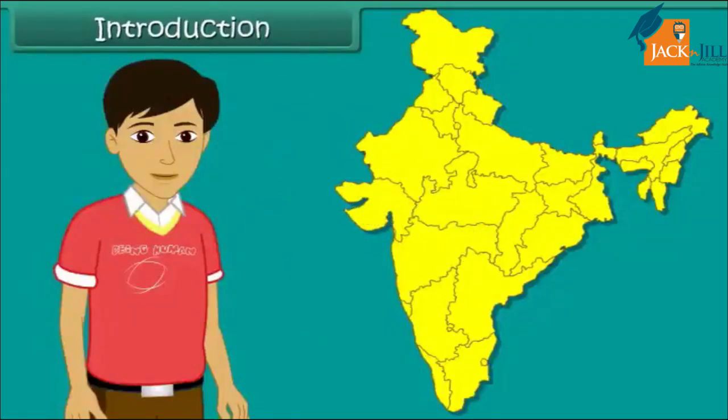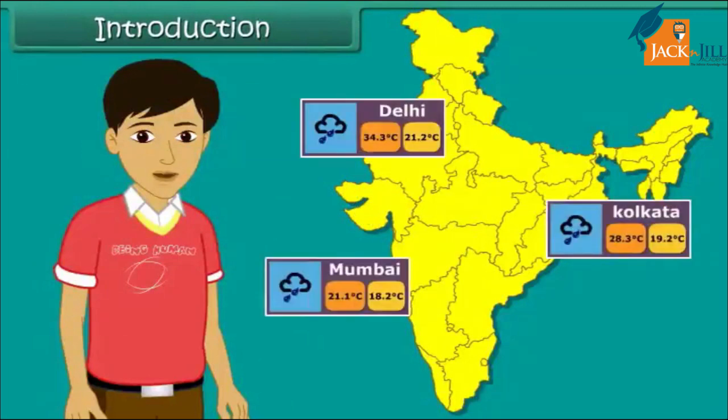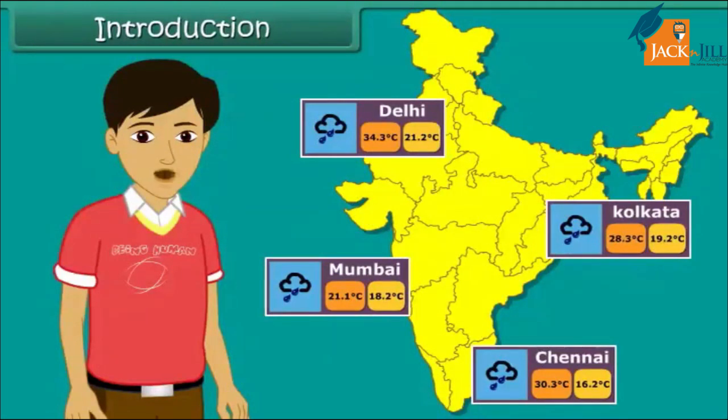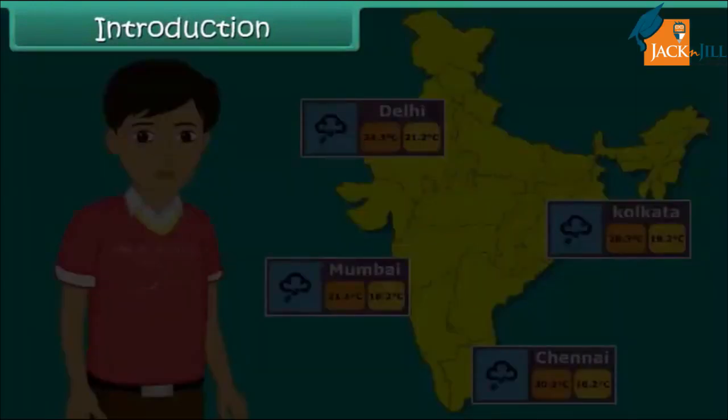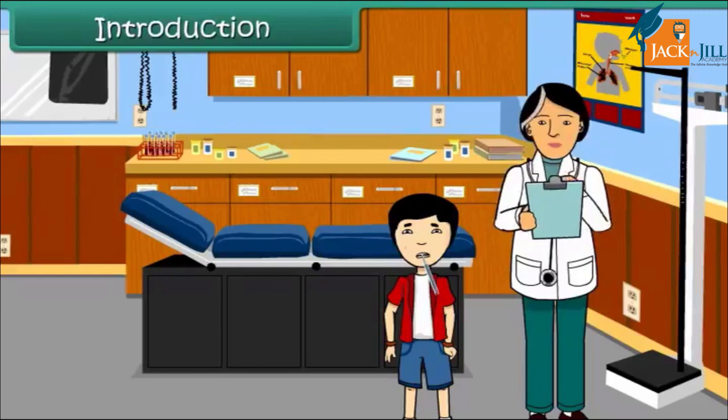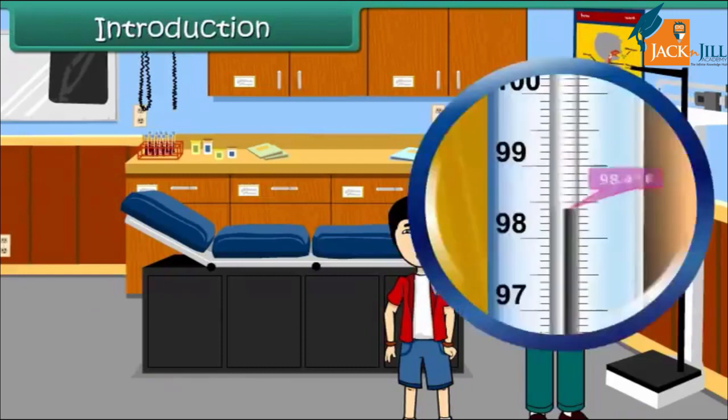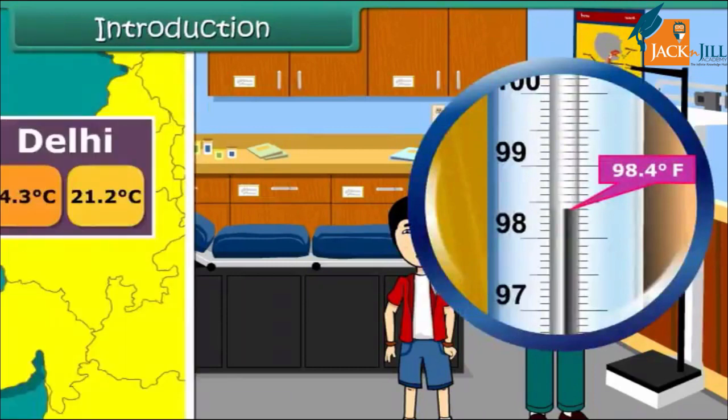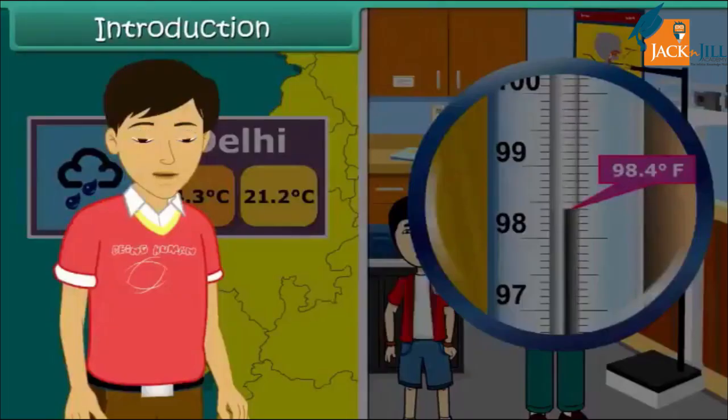Introduction. Have you seen how news channels report the maximum and minimum temperatures of a particular place on a particular day? 34.3 degrees Celsius, 21.2 degrees Celsius. When you go for your regular check-up, does your doctor check your body temperature and report it as 98.4 degrees Fahrenheit? The dots you see in these figures are known as decimals and these figures are known as decimal numbers. In this lesson, let us look at decimal numbers in great detail.